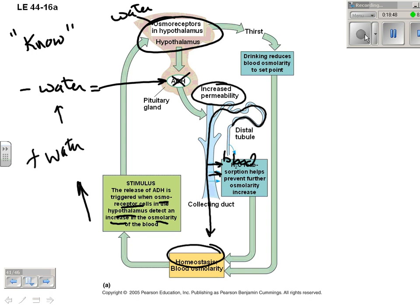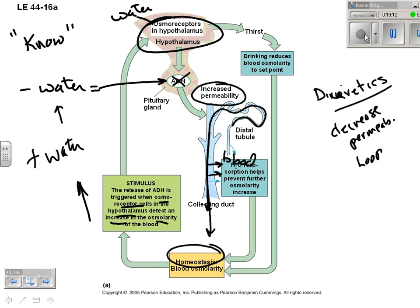Alcohol and coffee are diuretics — they keep water in your urine by decreasing the permeability of the loop and collecting duct. So even if you need water, you can get dehydrated by alcohol, coffee, and other diuretics. Antidiuretic hormone, by contrast, makes water go back into your blood, decreasing the amount of urine your kidneys produce.